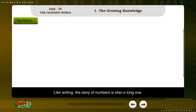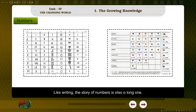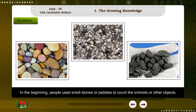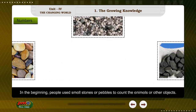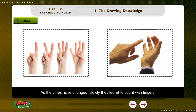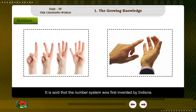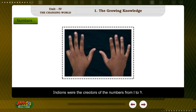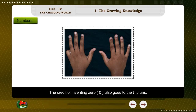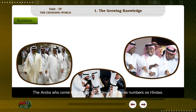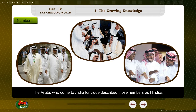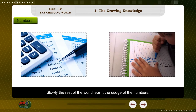Like writing, the story of numbers is also a long one. In the beginning, people used small stones or pebbles to count animals or other objects. As times changed, they slowly learned to count with fingers. It is said that the number system was first invented by Indians. Indians were the creators of the numbers from 1 to 9, and the credit of inventing 0 also goes to the Indians. The Arabs who came to India for trade described those numbers as 'Hindusa,' and slowly the rest of the world learned their usage.